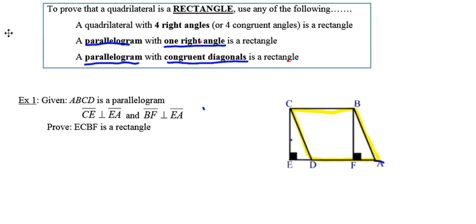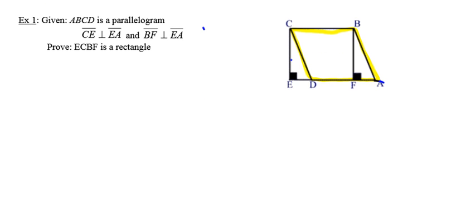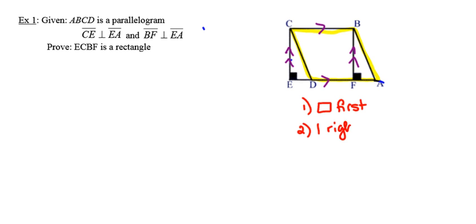Because the highlighted figure is a parallelogram, the top side and bottom side have to be parallel to each other, giving ECBF two parallel sides. Based on the congruent corresponding angles, the left side and right side also have to be parallel, making my figure a parallelogram. Since it contains a right angle, that automatically makes it a rectangle. So my strategy is: first show it's a parallelogram, then show it has one right angle, and a parallelogram with a right angle must be a rectangle.